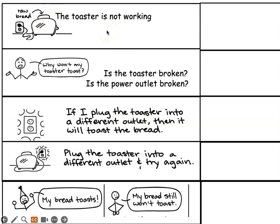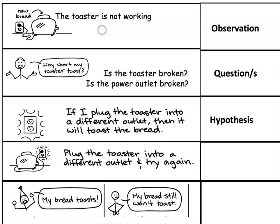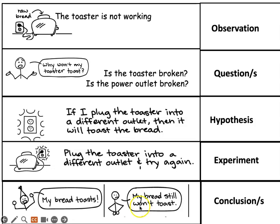Here's an example. You find your toaster is not working, and you ask: why won't my toaster toast? Is the toaster broken? Is the power outlet broken? Your hypothesis: if I plug the toaster into a different outlet, then it will toast the bread. You plug the toaster into a different outlet and try again. You find out your bread toasts — or your bread won't toast. In this scenario: the non-working toaster is the observation; the questions are what you ask; the hypothesis is the testable statement about plugging into a different outlet; that is the experiment; and the results and conclusions follow. If the bread toasts, the hypothesis is true. If it won't toast, the hypothesis is false, and you test another hypothesis.